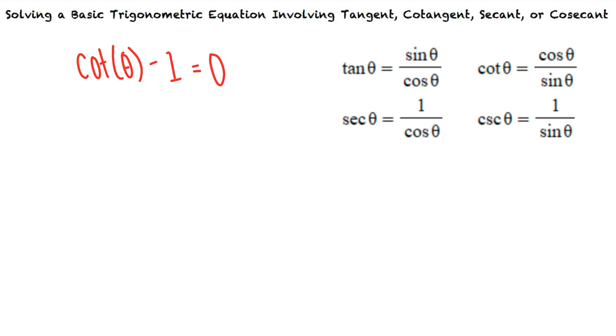In this problem, we need to solve the equation cotangent of theta minus 1 equals 0. If we add 1 to both sides, we see that cotangent of theta equals 1. Using our trig identities, we know that cotangent theta equals cosine theta over sine theta. So we can substitute this expression into our equation to result in cosine theta over sine theta equals 1.